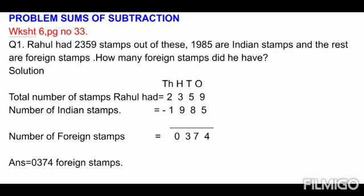Let's read the first problem sum. Rahul had 2,359 stamps. Out of these, 1,985 are Indian stamps and the rest are foreign stamps. How many foreign stamps did he have?